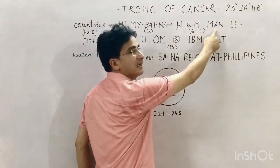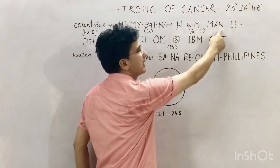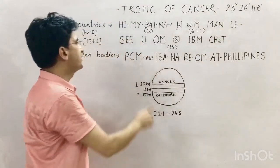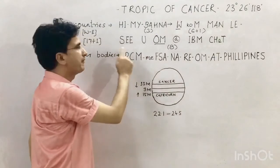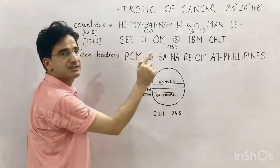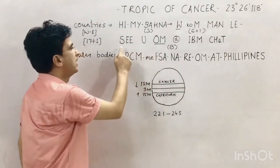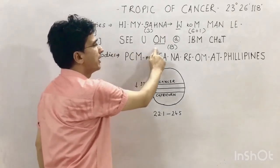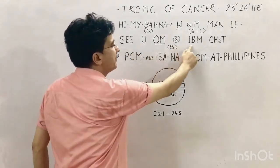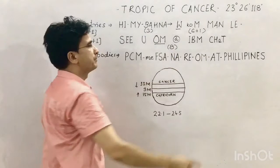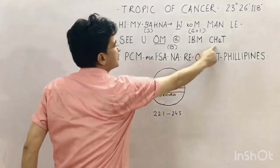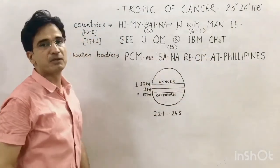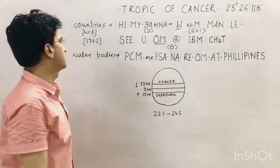Continuing: A for Algeria, then Niger, then Libya, then Egypt. For the Asian countries, the trick is 'S U OM at IBM CHET': S for Saudi Arabia, U for UAE, OM for Oman, IBM for India, Bangladesh, and Myanmar, and CHET for China and Taiwan. These are the eight Asian countries through which the Tropic of Cancer passes.